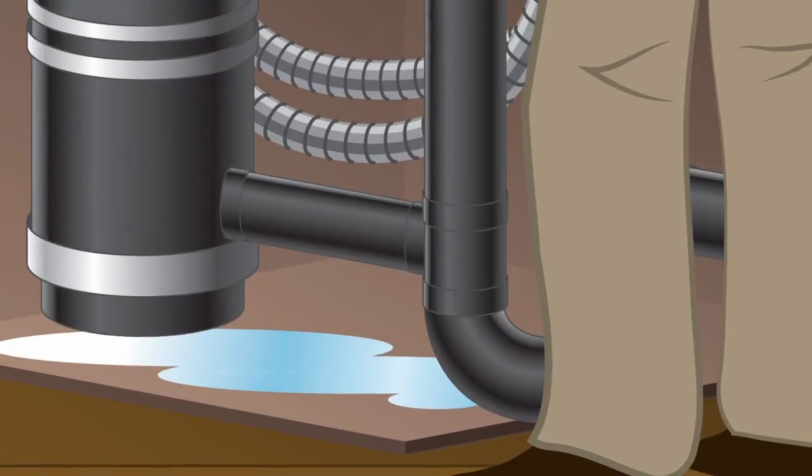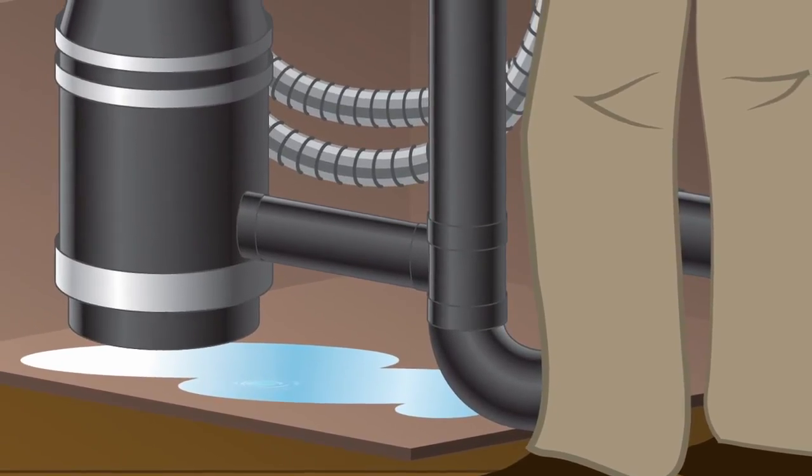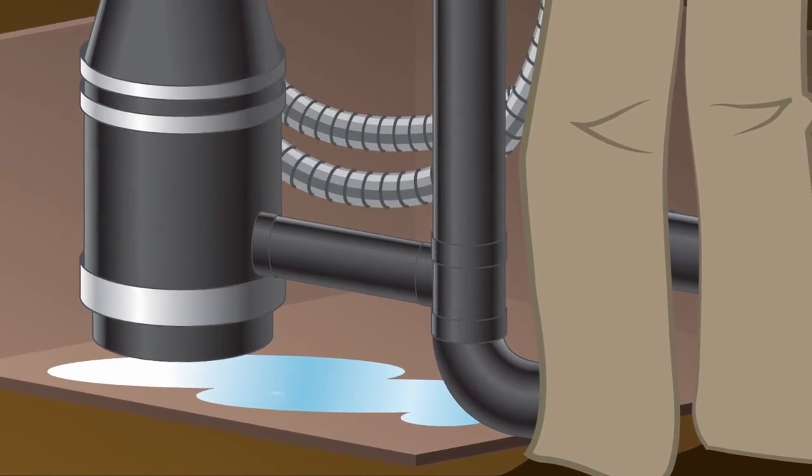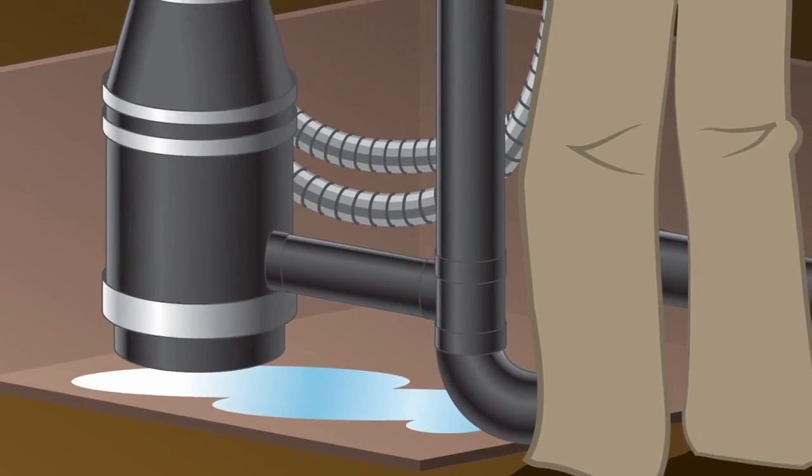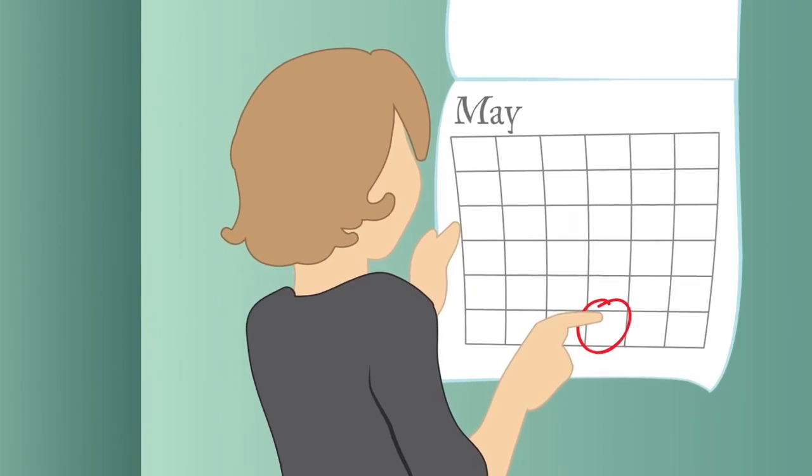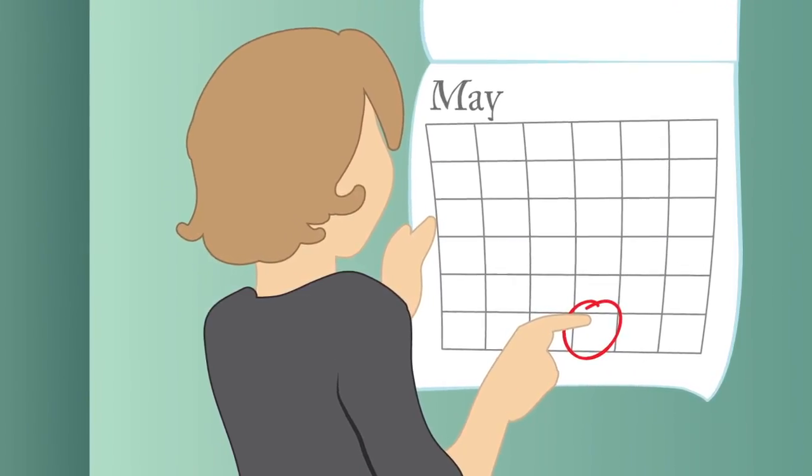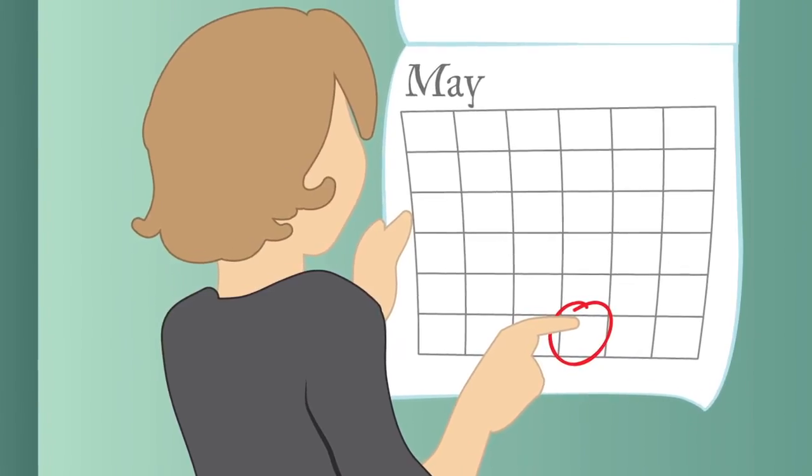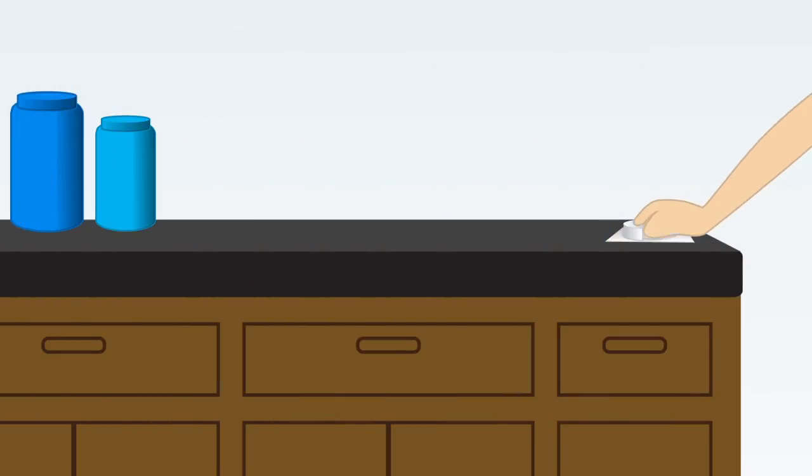Finally, to maintain long-term ant and roach control, continually check for leaks and other possible water sources that could attract insects. Using both Combat baits and gels in combination can provide effective, long-term ant and roach control. Be sure to replace baits and gels every three to six months.